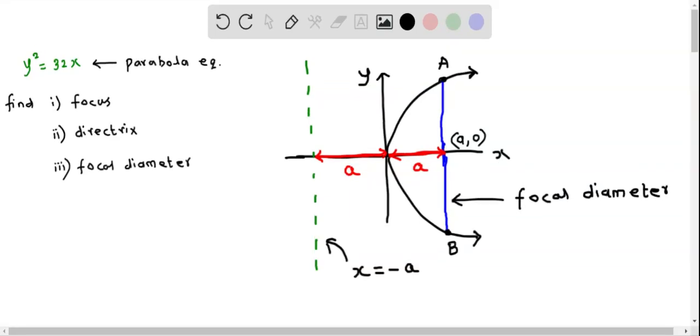We will now find some of the characteristics of this given parabola: the focus, directrix, and focal diameter. The parabola equation is given as y² = 32x. First, let me write down the general form of this type of parabola.